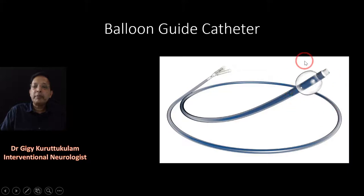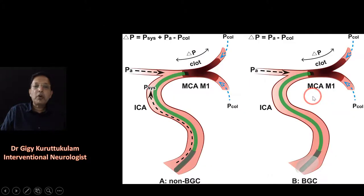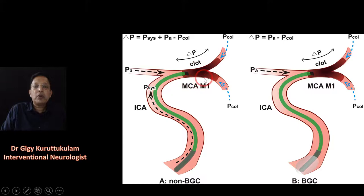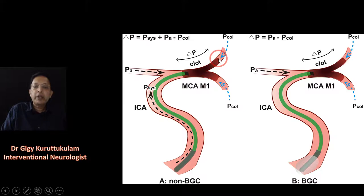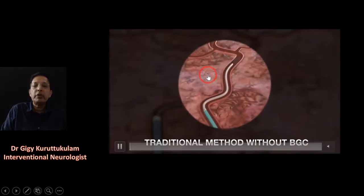To understand the balloon guide catheter, a little bit of physics is helpful — you should know about the pressures acting on the clot. Here you can see the internal carotid artery, the A1 segment of the anterior cerebral artery, and a clot at the M1 extending into the bifurcation — the superior division and inferior division — with the clot partially extending into both branches of the middle cerebral artery.